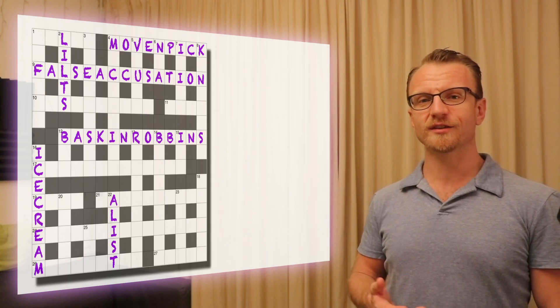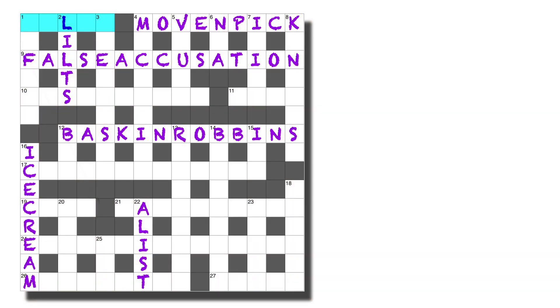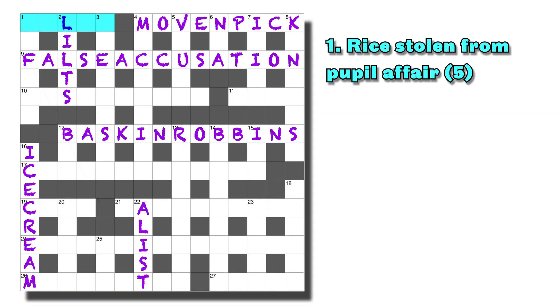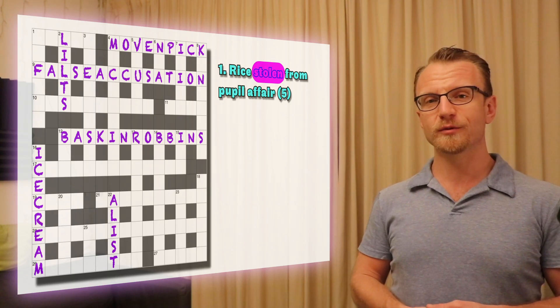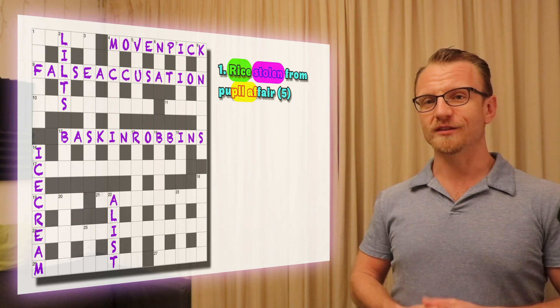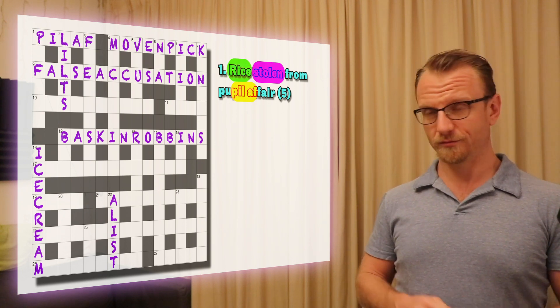So the hidden in our master grid is actually one across. Rice stolen from pupil affair. So the signpost here is stolen, and the letters we're looking for have literally been stolen from the phrase pupil affair, giving us a rice dish. So it's there.